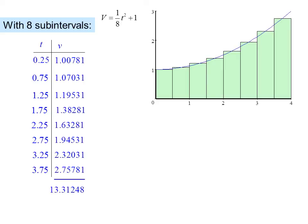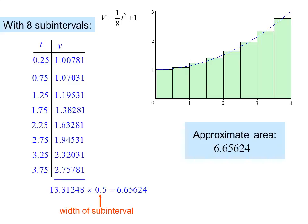So we can add up all the V values and get 13.31248 times 0.5, which is the width of the subinterval, and we get 6.65624 as the approximate area. Now, this is a little more accurate because it looks like, just eyeballing it, that the difference between the extra and the amount missing is smaller.